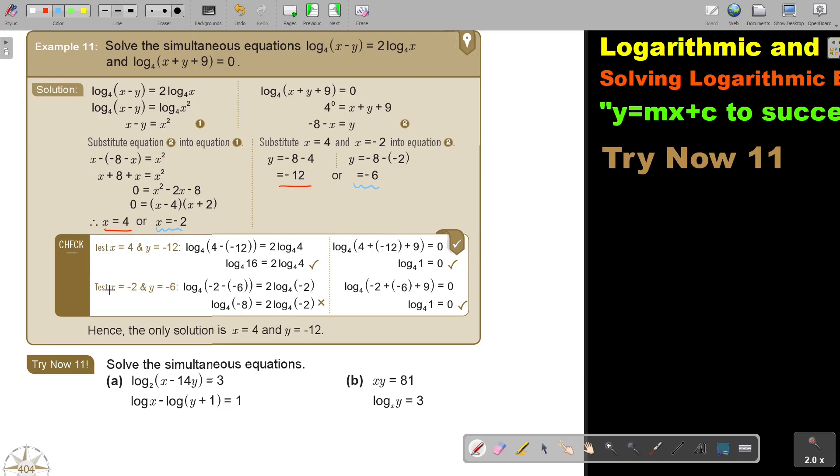But if I look at this one, negative 2, negative 2 and 6. In this one, there I get a negative. It's not working. If I put it in this one, it's working. But both of them must be correct in order to go with that pair of answers. So hence, the only solution will be x is 4 and x is negative 12.